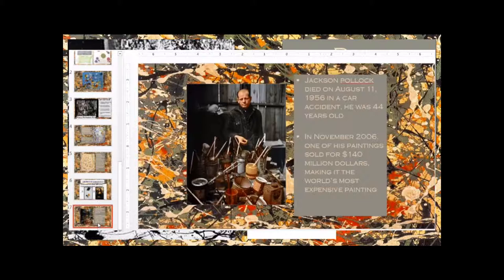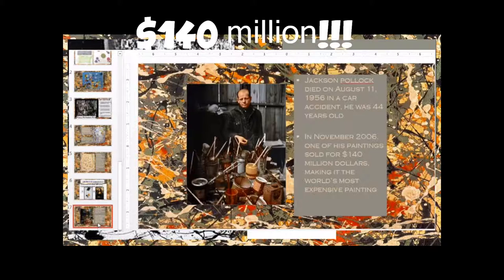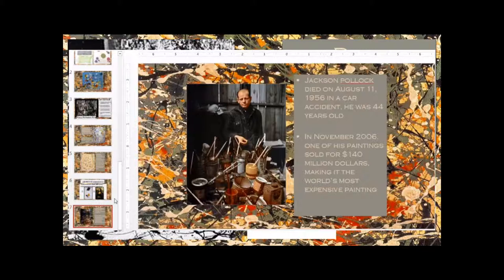Jackson Pollock died on August 11th in 1956 in a car accident. He was only 44 years old. In November 2006, one of his paintings sold for $140 million, making it the world's most expensive painting at the time.